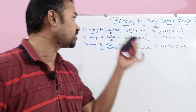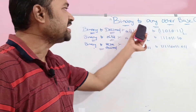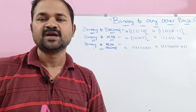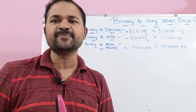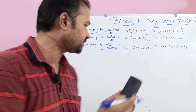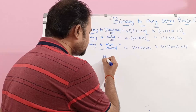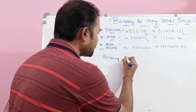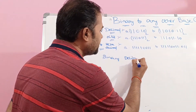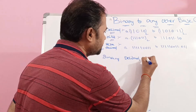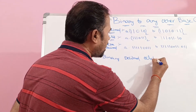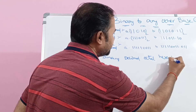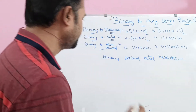Now let us discuss binary to any other base conversion. We mainly have 4 types of number systems: binary, decimal, octal, and hexadecimal.